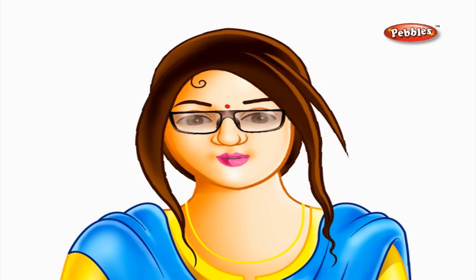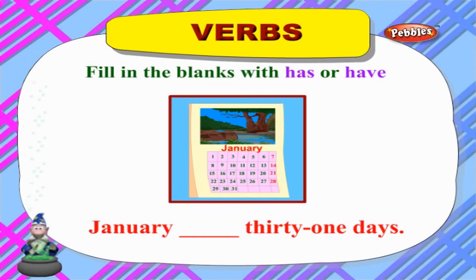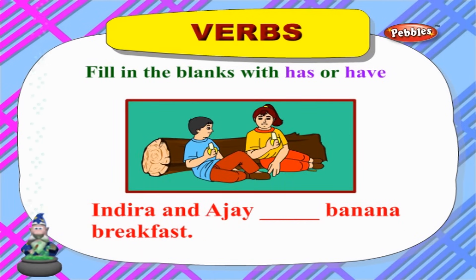Now I am going to teach you the usage of 'has' and 'have'. We use 'has' when we talk about a singular person or thing, and 'have' when we talk about many persons or things. 'The door ___ a handle' — the door is singular, so we use 'has': 'The door has a handle.' 'January ___ 31 days' — we are talking about a month, so we use 'has.'